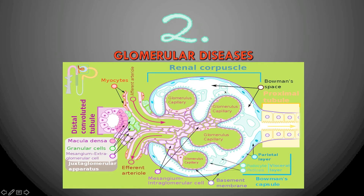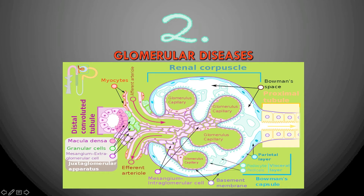The glomerulus, also called the renal corpuscle, has Bowman's capsule lined with podocytes which support the glomerular capillaries. The efferent arteriole gives out capillaries supported by a basement membrane, with podocytes below it having foot-like processes. Between the capillaries are mesangial cells — both intraglomerular and extraglomerular — which are important as many pathologies involve these mesangial cells.